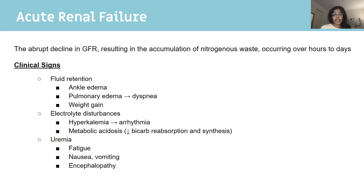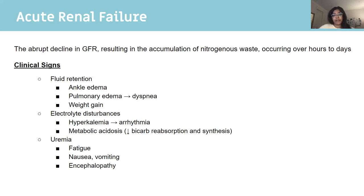Starting with acute renal failure, or acute kidney injury — they're interchangeable. The definition is an abrupt decline in your glomerular filtration rate, resulting in the accumulation of nitrogenous waste, usually over hours to days. Clinically, you'll see fluid retention — typically pitting ankle edema, which can extend up into the groin. You'll also see pulmonary edema causing shortness of breath, and weight gain due to fluid accumulation. Weighing the patient daily can help track fluid loss or gain.